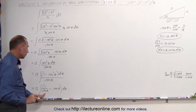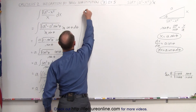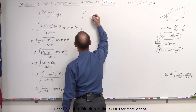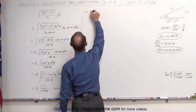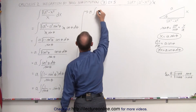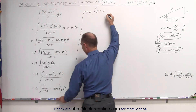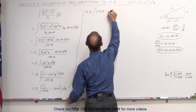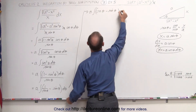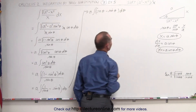This can be written as a times the integral of one over sine — which is the cosecant of theta — minus the sine of theta, times dθ. And now we're ready to integrate.